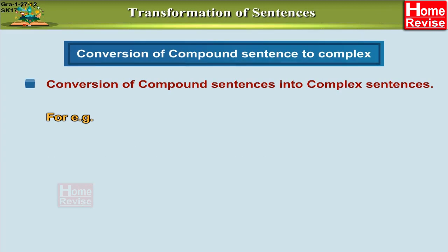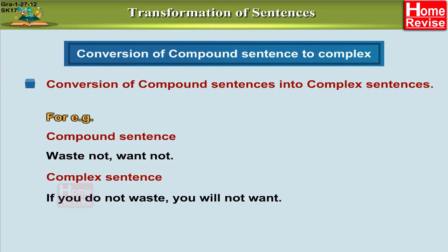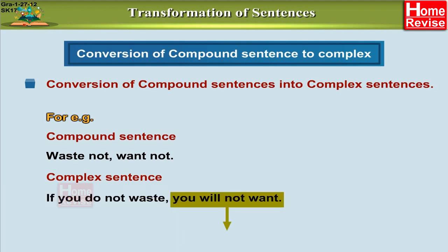Let's take one more example. 'Waste not, want not' — it's a compound sentence. The complex sentence becomes: 'If you do not waste, you will not want.' Here we again use the subordinating conjunction IF, which makes the subordinating clause, and 'you will not want' is the main clause.